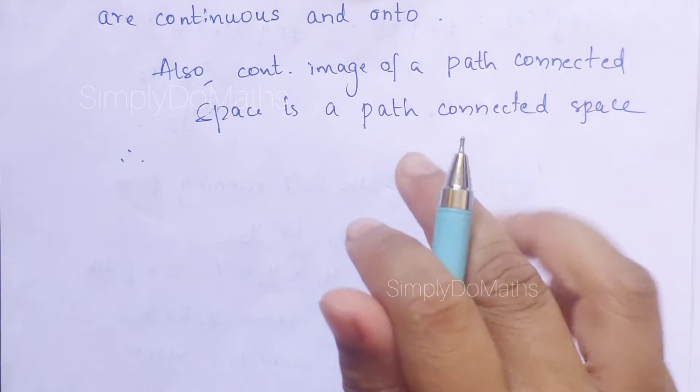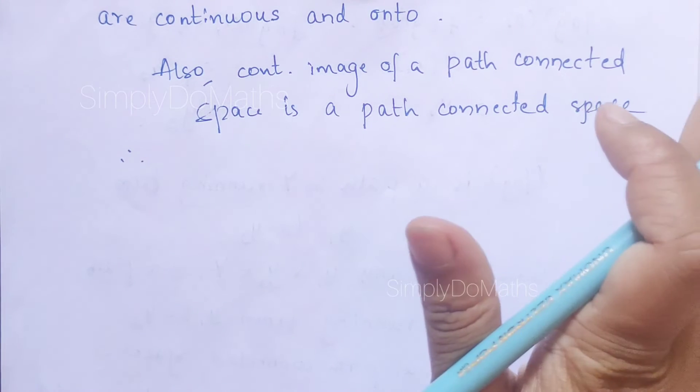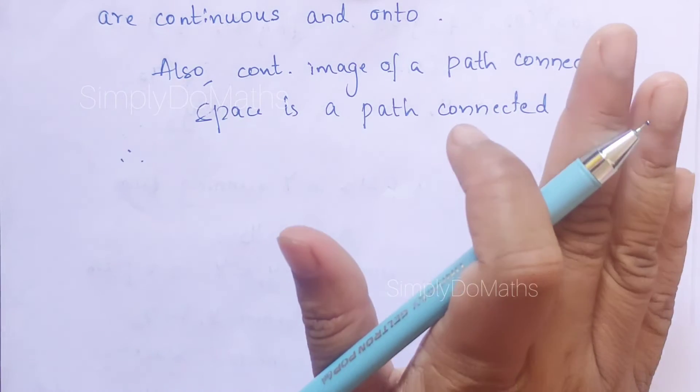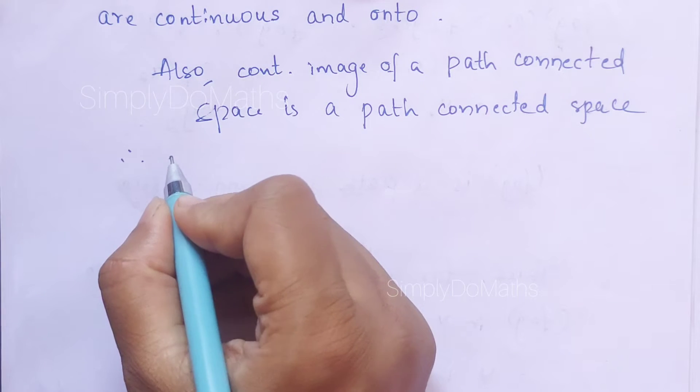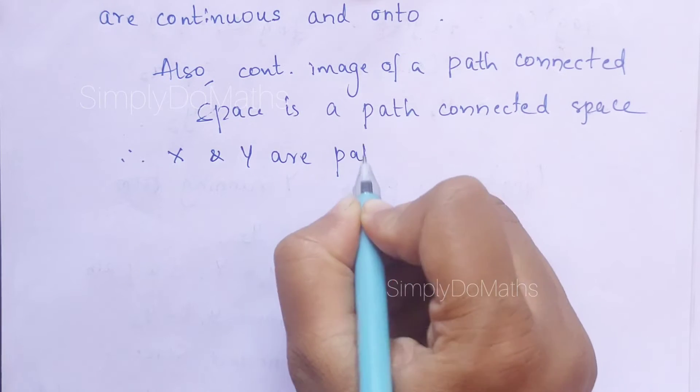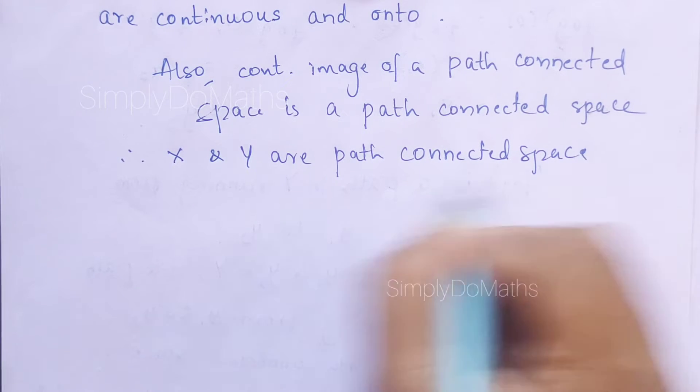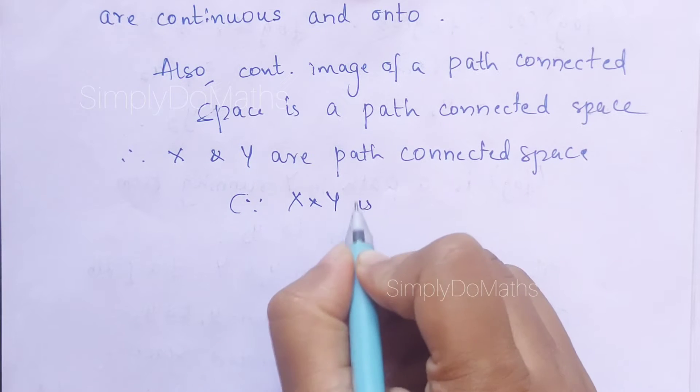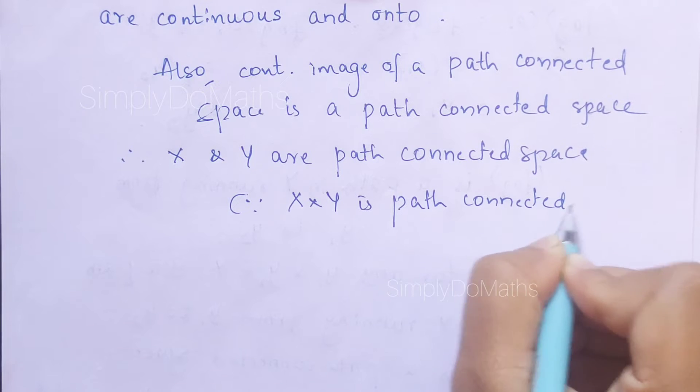Therefore, Px of X×Y to X and Py of X×Y to Y. X×Y is path-connected. Whenever we are applying the functions Px and Py, we will get Px of that which is X, and Py of X×Y which is Y, will be path-connected. Therefore X and Y are path-connected because X×Y is path-connected. Very simple proof.